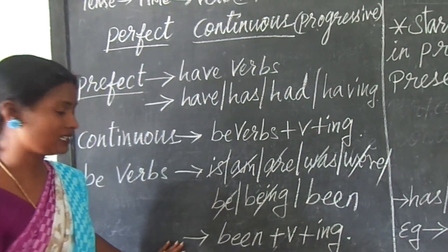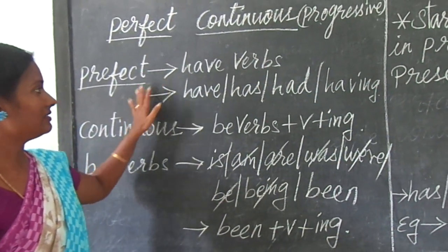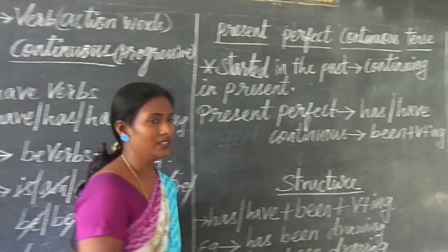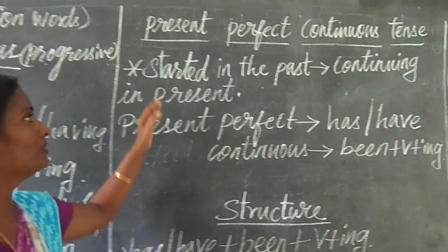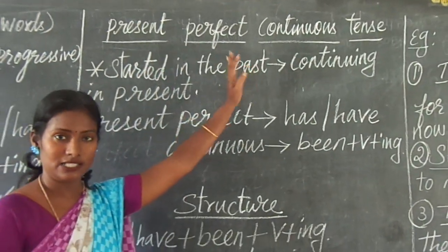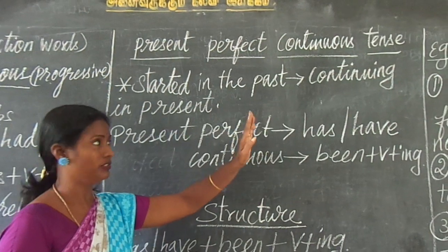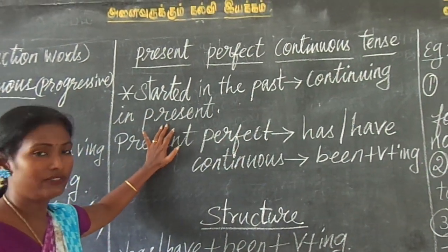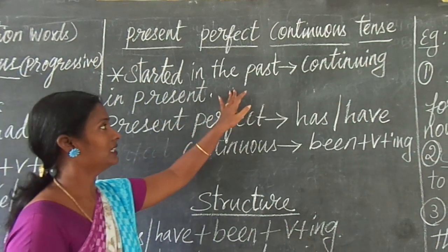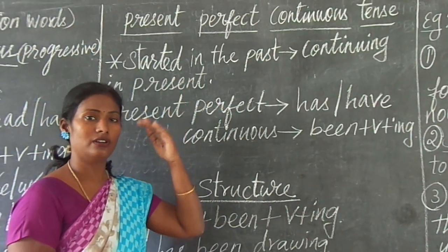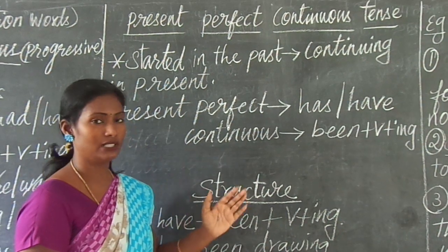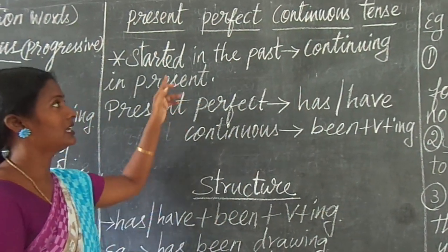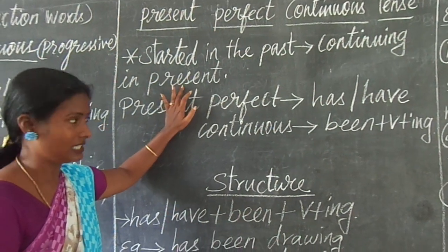So for the perfect structure we have have verbs, and for continuous structure we have been plus verb plus ing. So today we shall see what is present perfect continuous tense alone. The action has been started in the past — either one hour ago, one month ago, or one year ago, whatever it is — and it is still continuing till now, till the present. So that is called present perfect continuous tense.